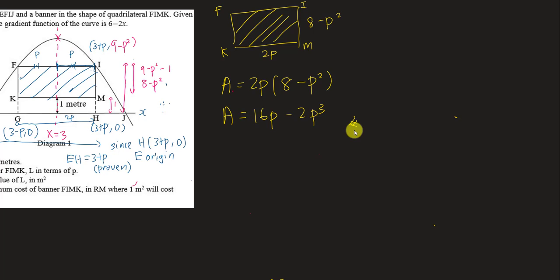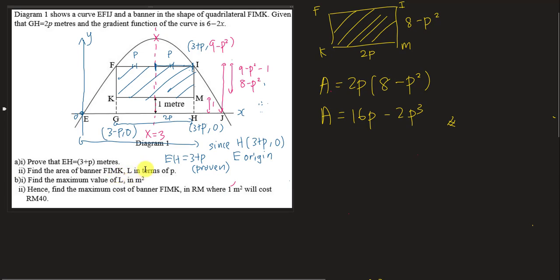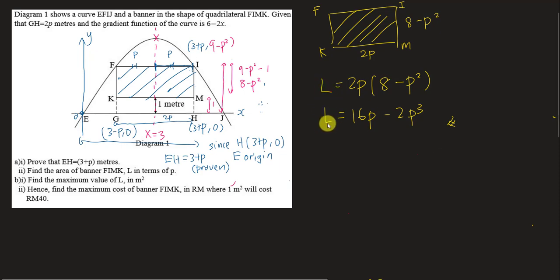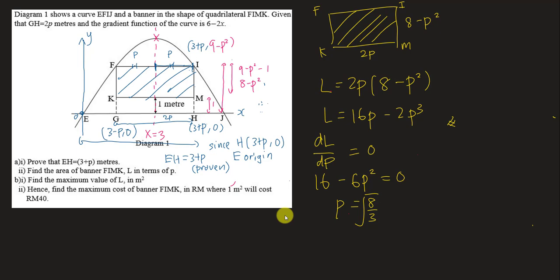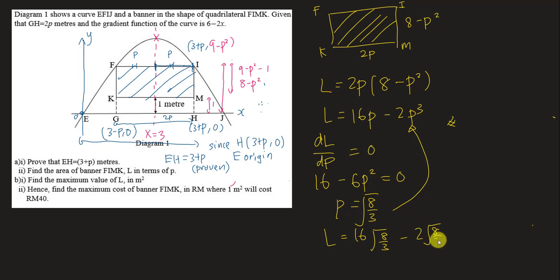Now they ask us to find the maximum value of L. To find the maximum, we set dL/dP equals zero. So 16 minus 6P squared equals zero, which gives P squared equals 8 over 3, so P equals the square root of 8 over 3. Substituting back into L: L equals 16 times root(8/3) minus 2 times root(8/3) cubed.